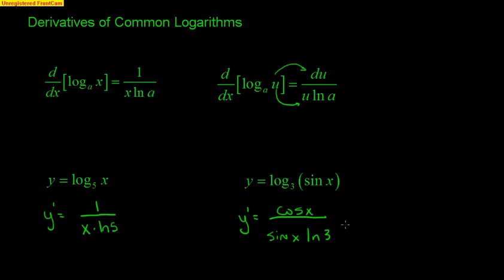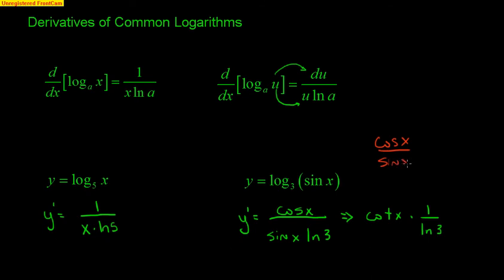One other thing we could do — if you're picky about multiple choice — cosine over sine is cotangent of x, so we could also write it as cotangent x times 1 over the natural log of 3. That uses the trig quotient identity. Either form is acceptable.